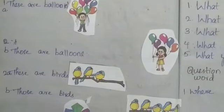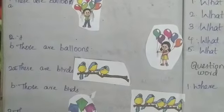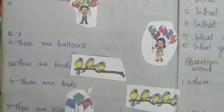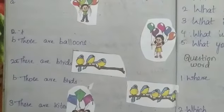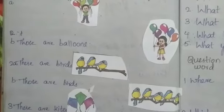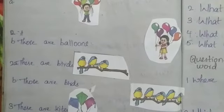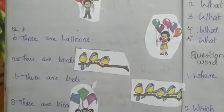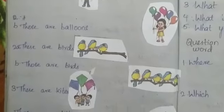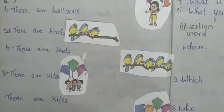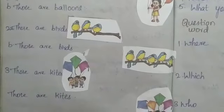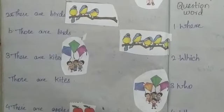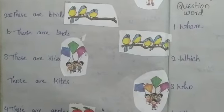Second example: these are birds — the birds are nearby. Those are birds — the birds are far. Here we have only three birds nearby, while the birds which are far are more in number. Third example: these are kites — here we have three children nearby. Those are kites — there we have four children, the kites being far.